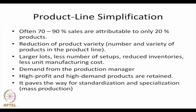The reverse is product line simplification. A company with many products may find that maximum sales take place for only a few. The question is: why not reduce the product variety? Once we reduce the number of varieties, we can concentrate on larger lots, fewer setups, reduced inventories and reduced manufacturing cost. High profit and high demand products are retained and low profit, low demand products are eliminated.